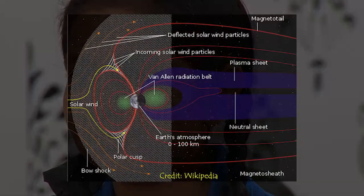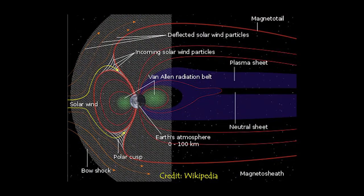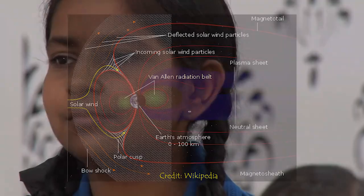The solar wind extends throughout the solar system. In fact, we are embedded in the solar wind — it extends as far as the orbit of Pluto and further out as well.